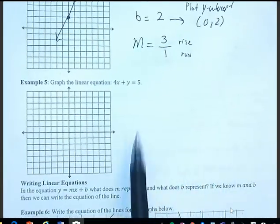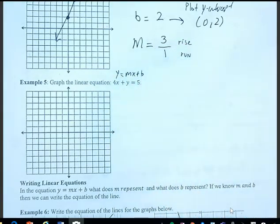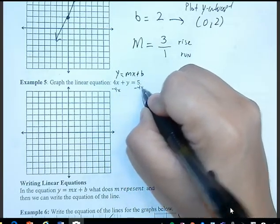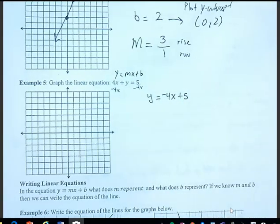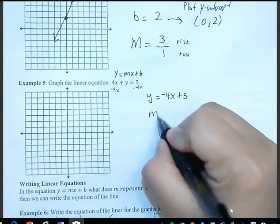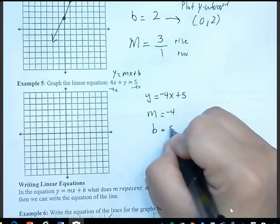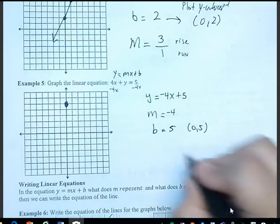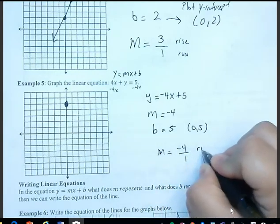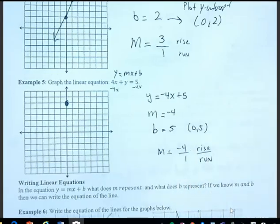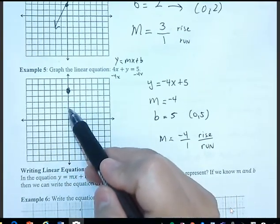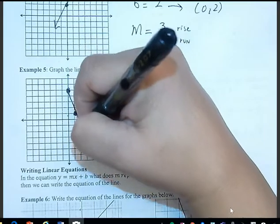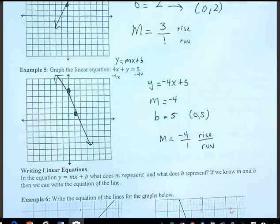For number 5, the equation is not in slope-intercept form, so first we need to solve for y. Subtracting 4x from both sides gives y equals negative 4x plus 5. My slope is negative 4 and b is 5. Plot the y-intercept first, then use the slope: since the 4 is negative, go down four units, and the run is positive so move to the right. Notice that the line is decreasing.